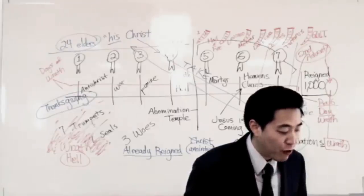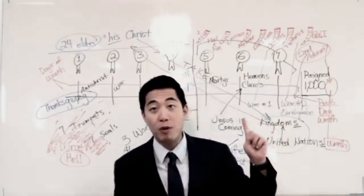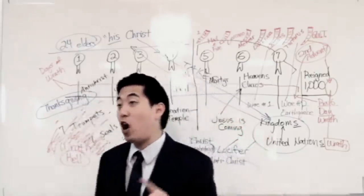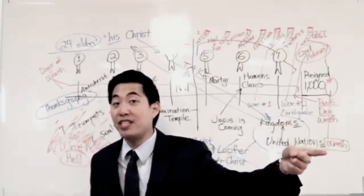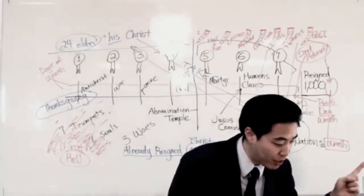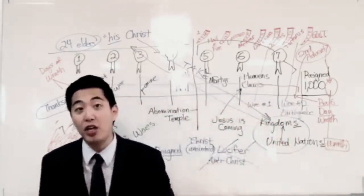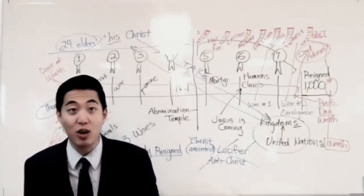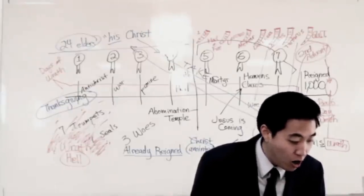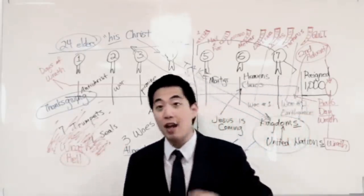Look at verse 18. That thou shouldest give reward unto thy servants the prophets. Right? Remember, look at that word prophets throughout your Bible, like 1 Peter for example. When 1 Peter talks about the prophets testifying about the Messiah to come, that's referring to what time period? The Old Testament. There's Old Testament. And to the saints. Look up the word saints throughout the book of Revelation. That's referring to the tribulation saints. And them that fear thy name, small and great. See that? So that's the remaining people, those who fear God's name small and great. That's the millennium.